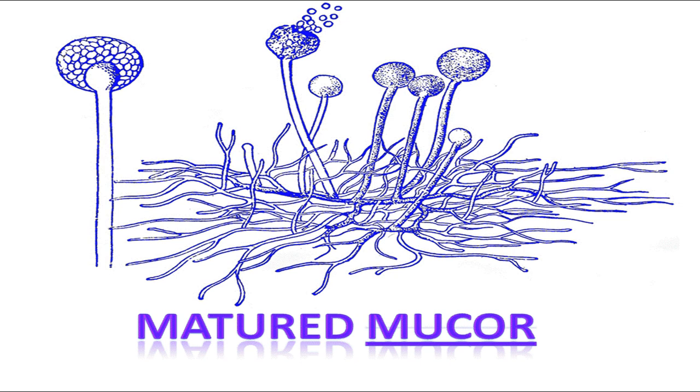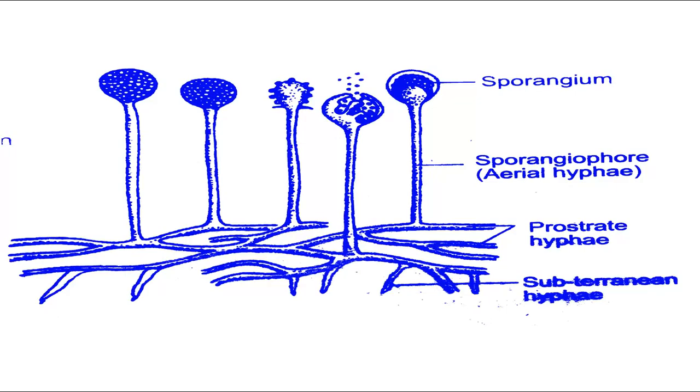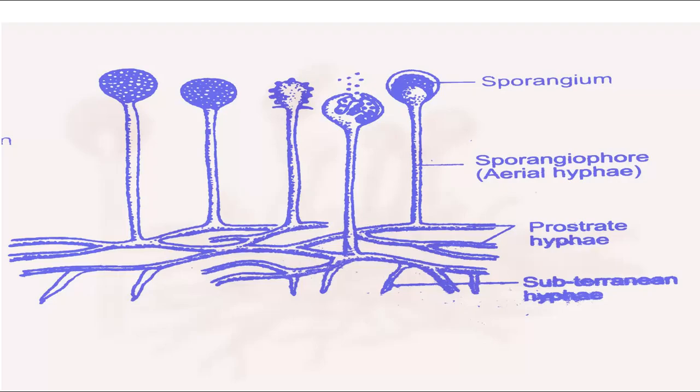Asexual reproduction in Mucor takes place by forming different types of spores like sporangiospores, chlamydospores, gemmae and oidia. The most common type of reproduction in Mucor takes place by the formation of sporangiospores.